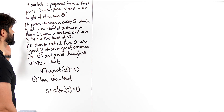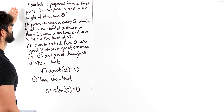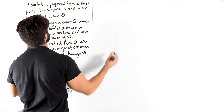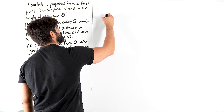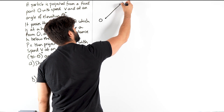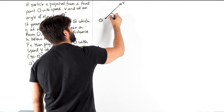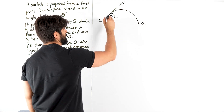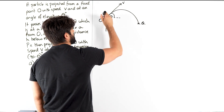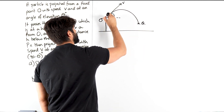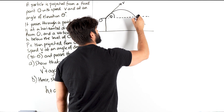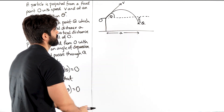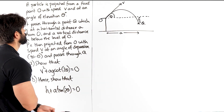Now obviously we need to draw a diagram. There are two situations. There's it being projected upwards at an angle of elevation theta. So we have some point O and it's being projected like this with speed V. This is theta, and it's coming down reaching some point Q, which is H below the level. So maybe it is elevated — not that it matters. Q is H below, but it's a horizontal distance A away.